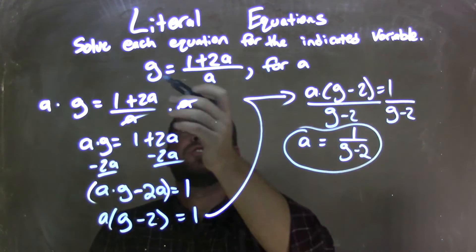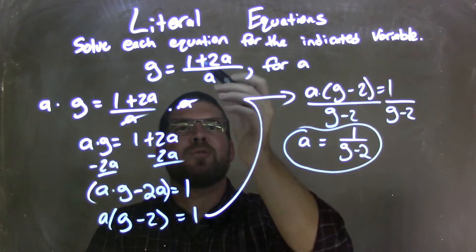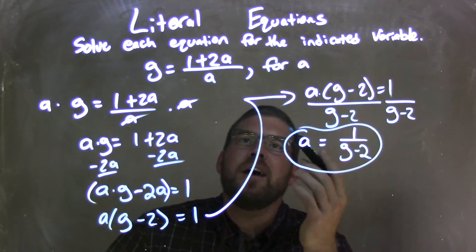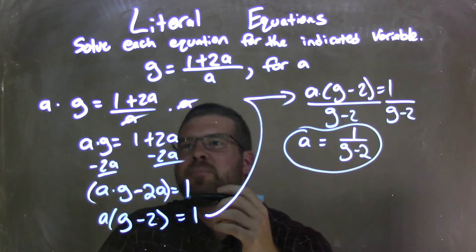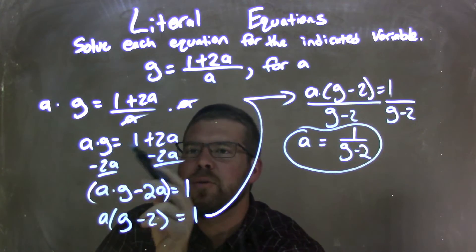So let's recap. We're given g equals 1 plus 2a over a, and we're solving for a here. So I rewrite my equation, and I multiplied a to both sides, giving me a times g equals 1 plus 2a.